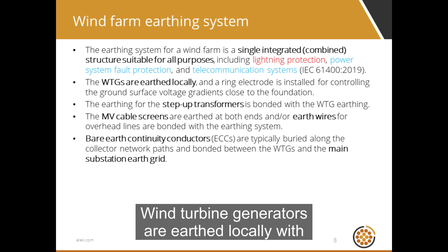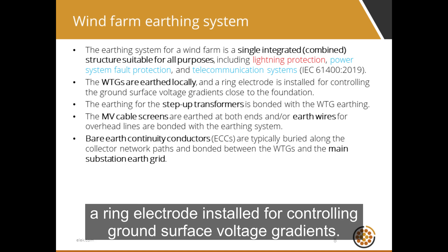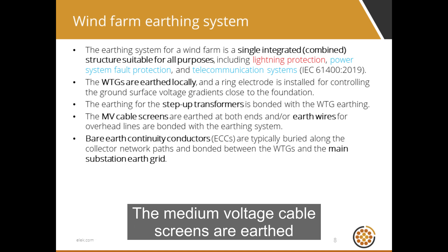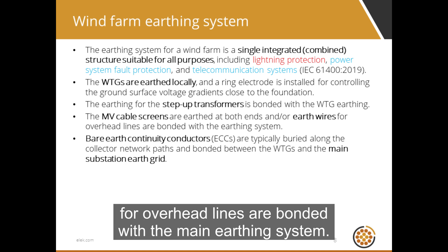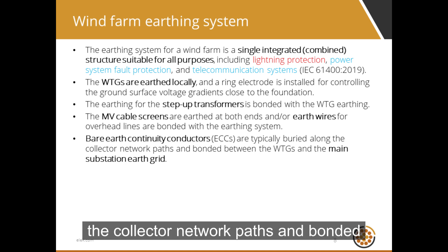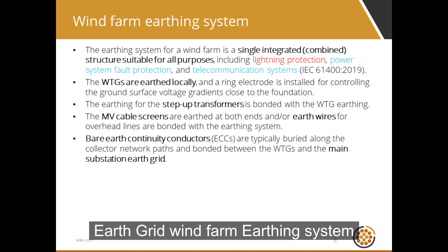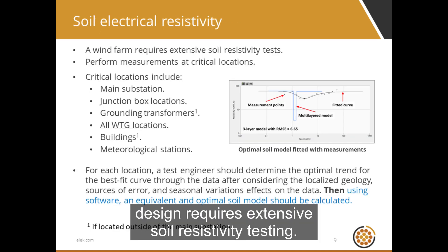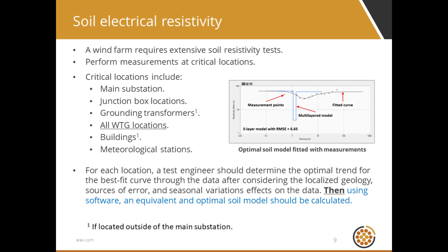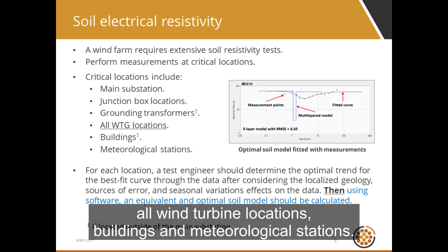Wind turbine generators are earthed locally, with a ring electrode installed for controlling ground surface voltage gradients. The earthing for the step-up transformers is bonded with the wind turbine earthing. The medium voltage cable screens are earthed at both ends, and earth wires for overhead lines are bonded with the main earthing system. Bare earth conductors are typically buried along the collector network paths and bonded between the wind turbines and the main substation earth grid. A wind farm earthing system design requires extensive soil resistivity testing performed at critical locations, including the main substation, junction boxes, grounding transformers, all wind turbine locations, buildings, and meteorological stations.